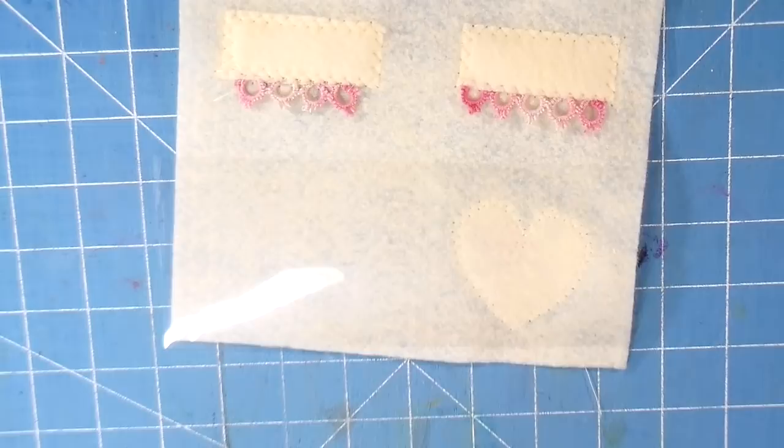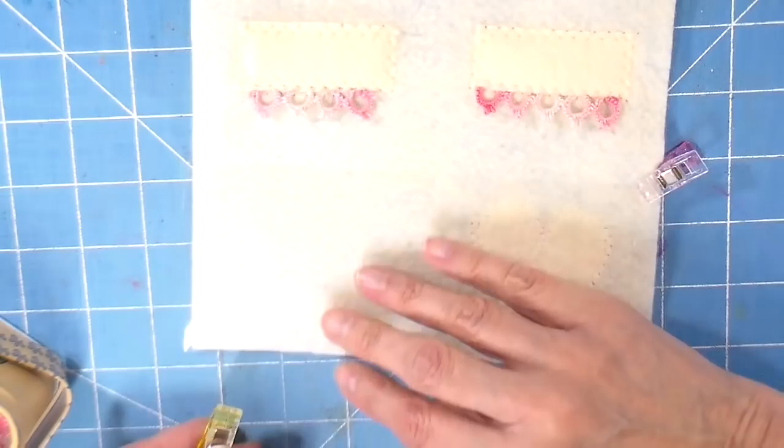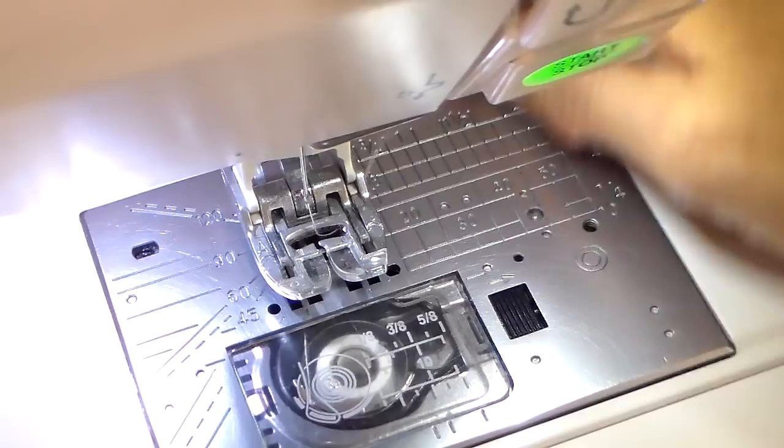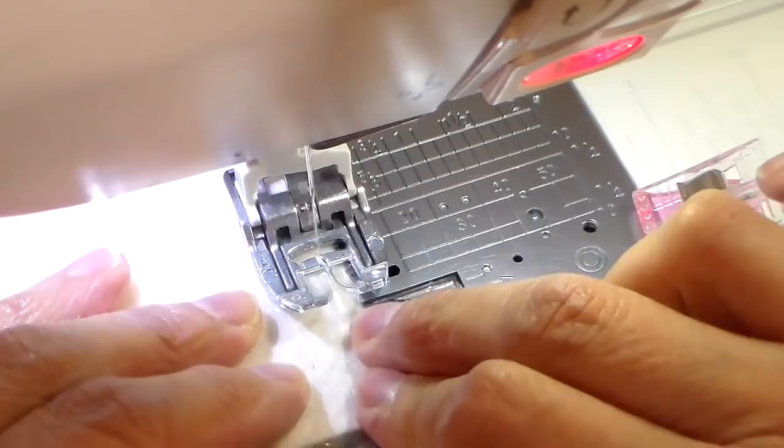That is all zigzagged, and now I'm going to put on my pocket. Two things that are just a must when you do vinyl: the clips - you want to clip instead of using pins, so I'm going to use my wonder clips here and just get this vinyl into place. And another thing is your even feed dog foot.